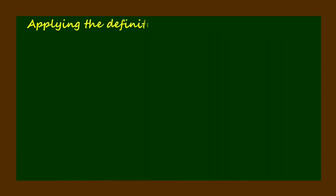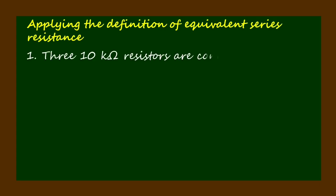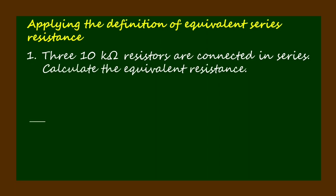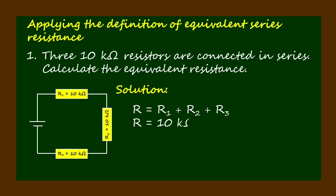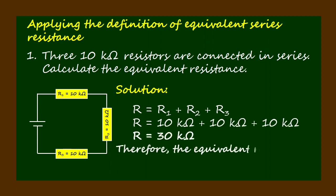Applying the definition of equivalent series resistance, let's solve the problem: three 10 kilohm resistors are connected in series — calculate the equivalent resistance. First, let's draw the diagram before doing the calculation. The solution: R equals R1 plus R2 plus R3 equals 10 kilohms times 3, therefore the equivalent resistance R is 30 kilohms.